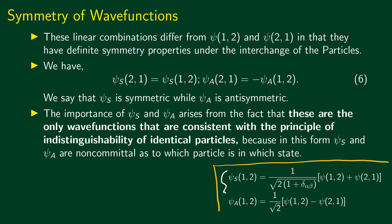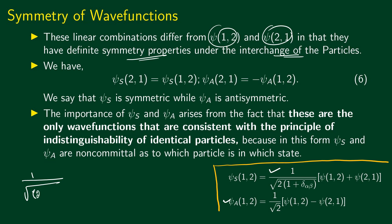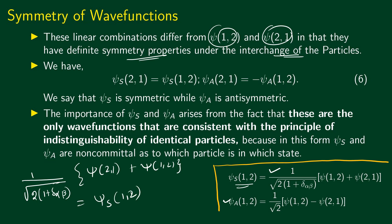These two linear superpositions, ψ_S(1,2) and ψ_A(1,2), are possible states of the quantum mechanical system because they are solutions to the Schrödinger equation. They differ from ψ(1,2) and ψ(2,1) in an important way: ψ_S and ψ_A have definite symmetry properties under the interchange of particles. If we interchange particles 1 and 2 in ψ_S, we get (1/√(2(1+δ_{αβ})))[ψ(2,1) + ψ(1,2)], which is exactly the same as ψ_S(1,2). So ψ_S is symmetric under particle interchange — that is why we use the subscript S.